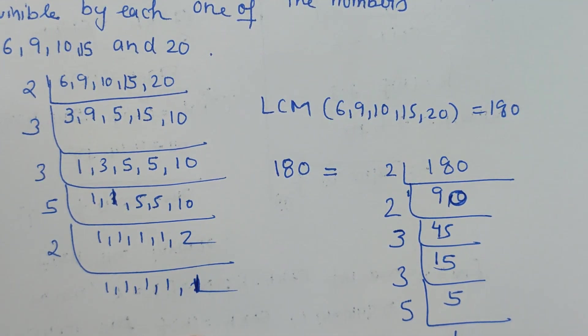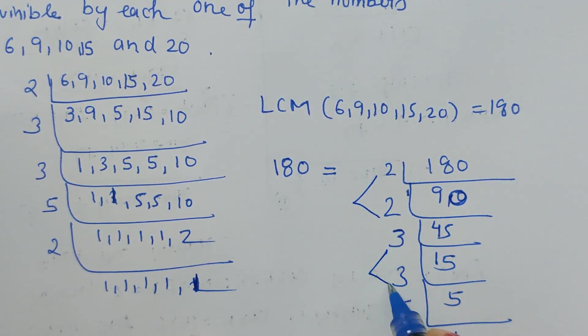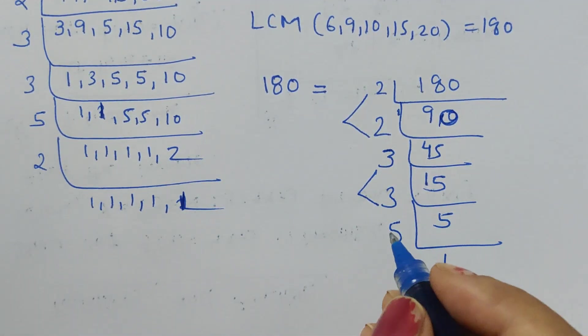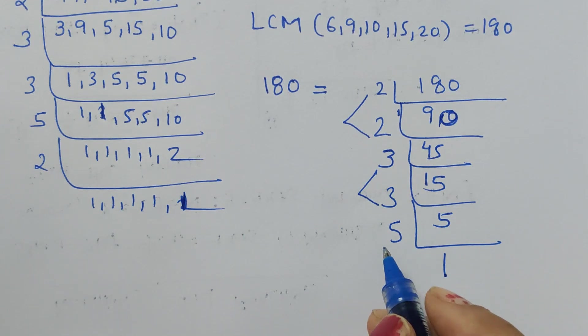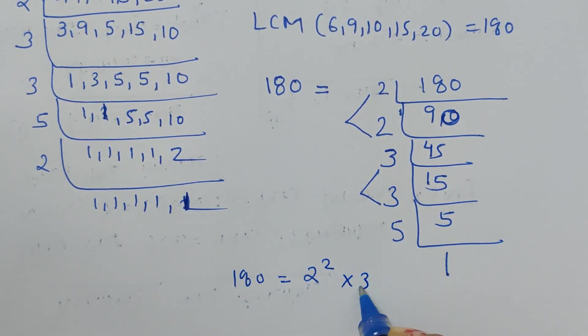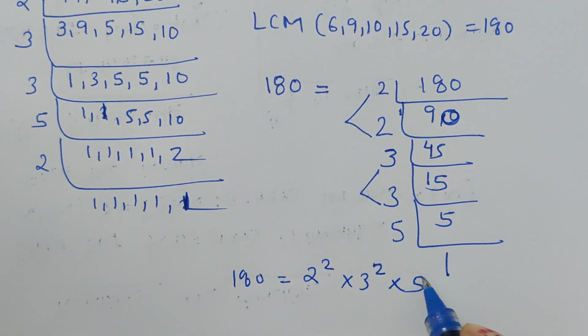So it is 2, 2, 3, 3, and 5. One more 5 is required for making it a perfect square. So we can write 180 as 2 squared times 3 squared times 5. One more 5 is required for making it a perfect square.